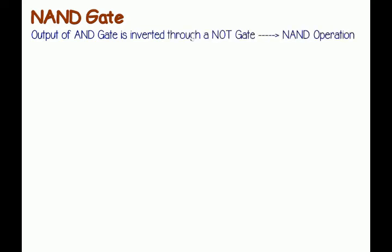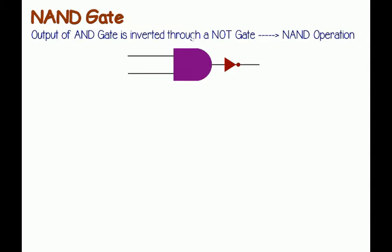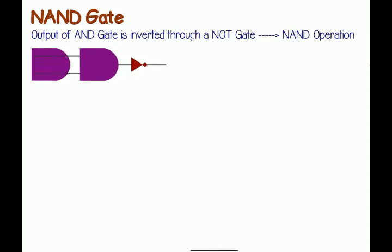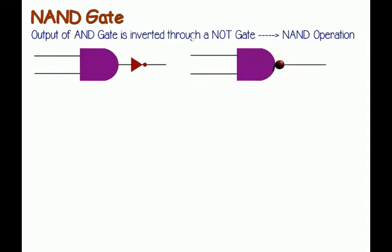Let us discuss the logical NAND gate. When the output of an AND gate is inverted through a NOT gate, the operation is called a NAND operation. The logic gate which performs this NAND operation is called a NAND gate. A NOT gate followed by an AND gate makes a NAND gate. The basic logical construction of the NAND gate is shown here in this figure. The symbol of a NAND gate is similar to the symbol of an AND gate, but one bubble is drawn at the output point of the AND gate.